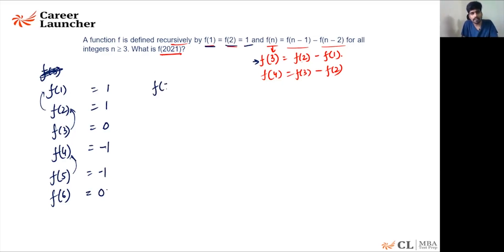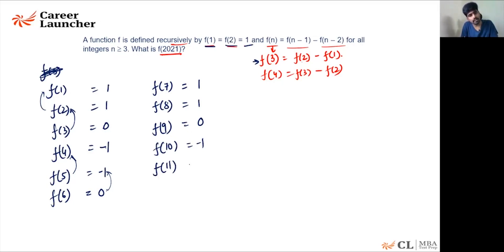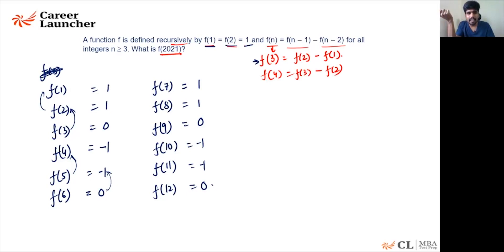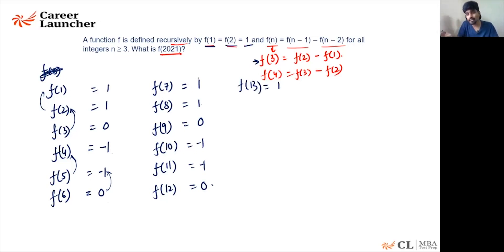f(6) = f(5) minus f(4) = -1 minus (-1) = 0. f(7) = 0 minus (-1) = +1. f(8) = 1, f(9) = 0, f(10) = -1, f(11) = -1, f(12) = 0. So the sequence is: 1, 1, 0, -1, -1, 0, 1, 1, 0, -1, -1, 0. The values repeat. f(13) = 1, f(14) = 1, f(15) = 0, and so on.